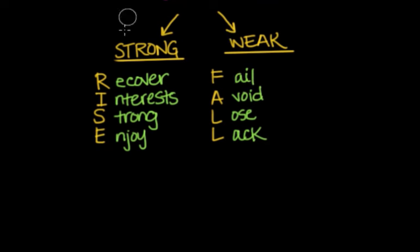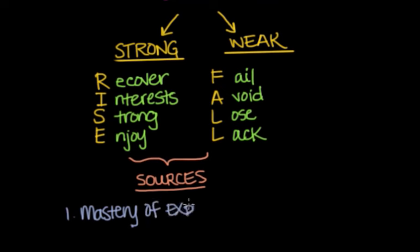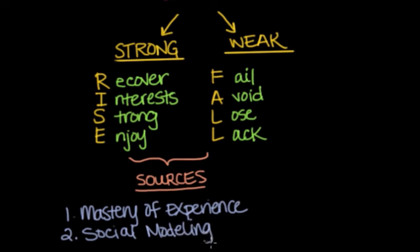There are four major sources of self-efficacy. We look at these sources and experiences to determine whether the person will have a strong or weak sense of self-efficacy. The first is mastery of experiences, so performing a task successfully will strengthen our sense of self-efficacy. Then there's social modeling, so seeing people similar to ourselves successfully complete a task raises our beliefs that we too have the capabilities to master comparable activities and also succeed.